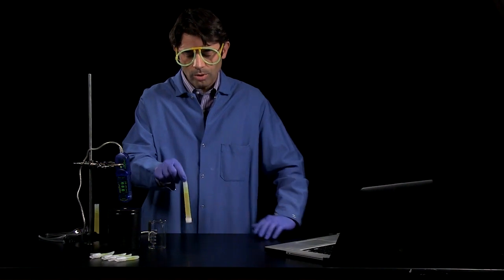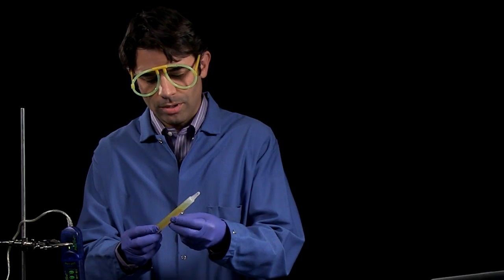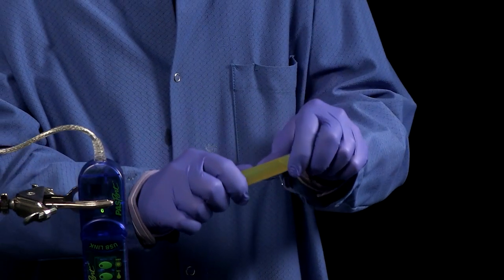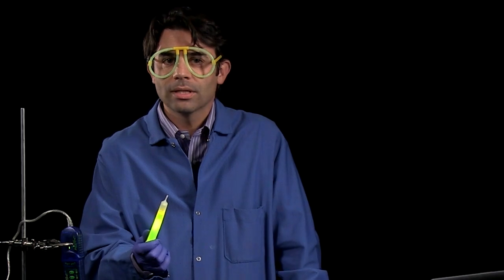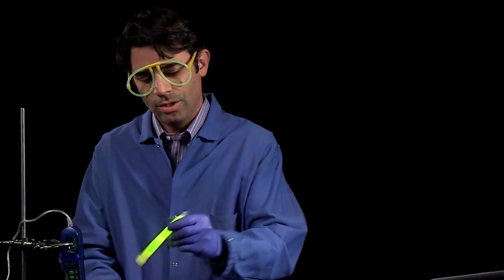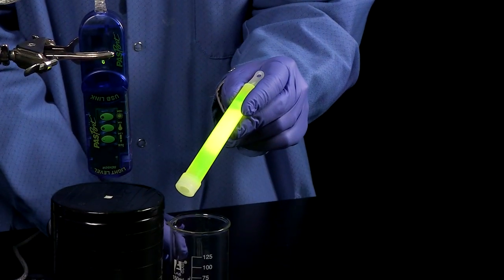The way the glow stick works is there are two separate containers, and when you break it, the container containing the hydrogen peroxide mixes with the container containing the phenyl oxalate ester and fluorescent dye, and you get this nice glowing stick.